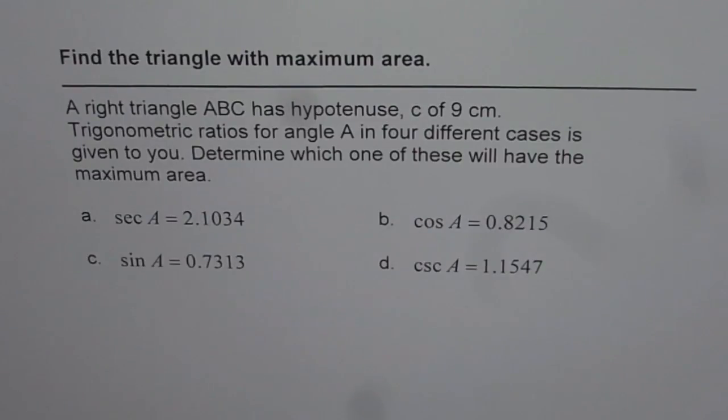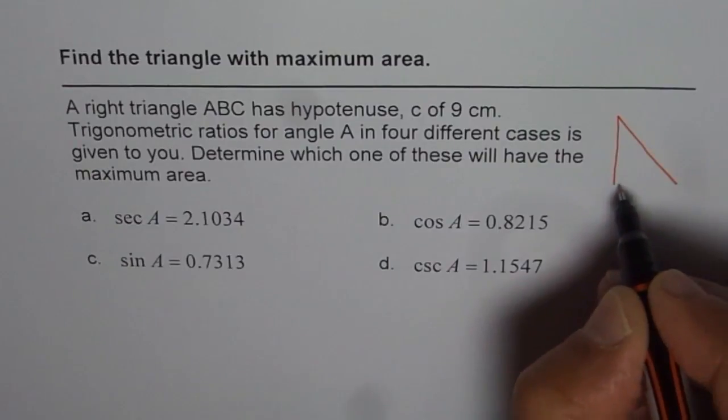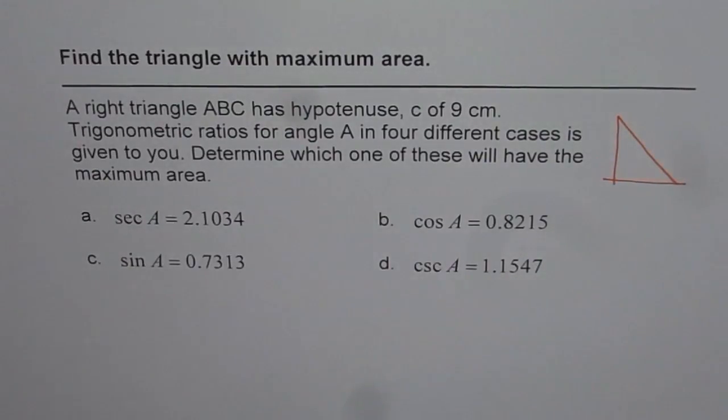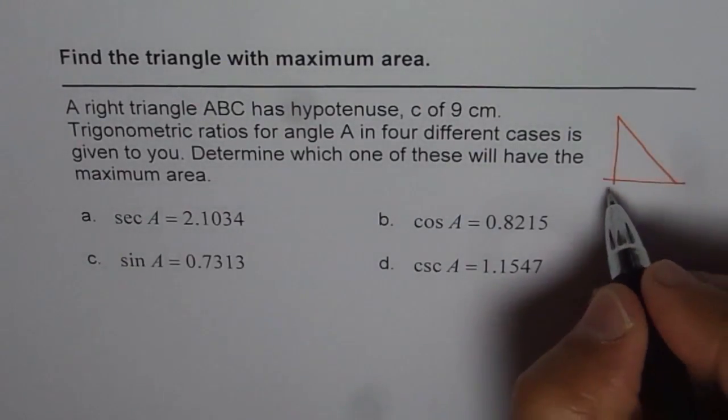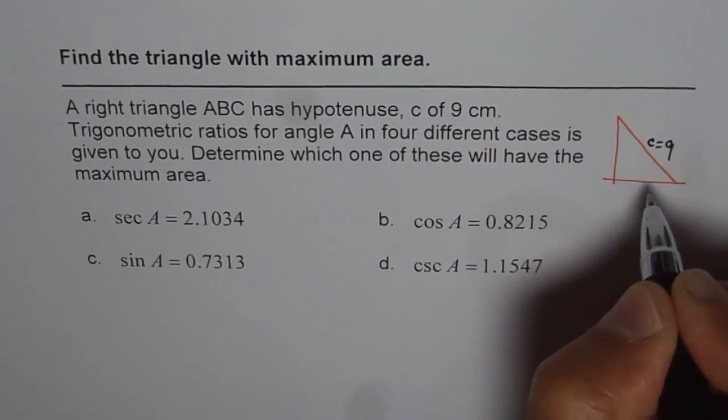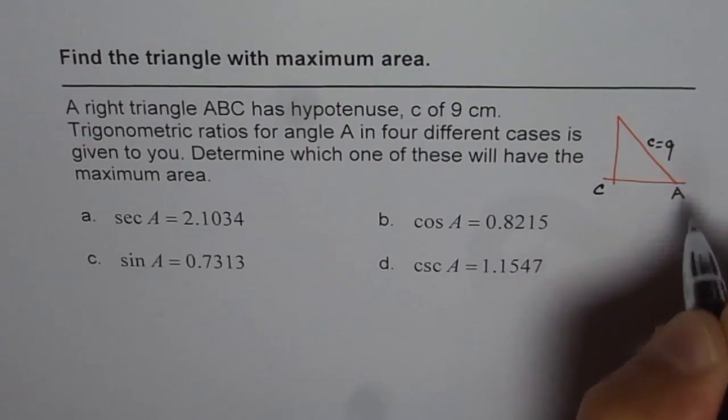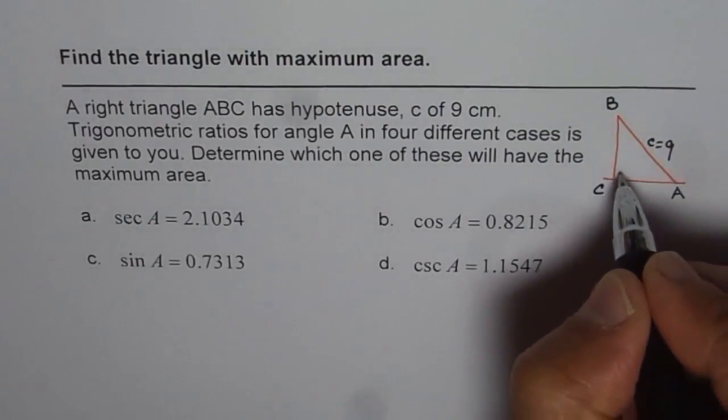Determine which one of these will have the maximum area. So what you are given is a right triangle. Let us say this is your right triangle. And in this triangle, side C is equal to 9 cm. So that becomes C for you. Let us say this is A and that is B.